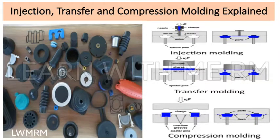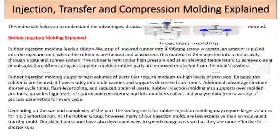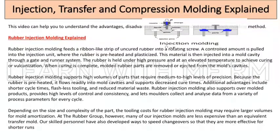This video can help you understand the advantages, disadvantages, and recommended uses for each molding method. Rubber injection molding feeds a ribbon-like strip of uncured rubber into a rotating screw. A controlled amount is pulled into the injection unit where the rubber is preheated and plasticized, then injected into a mold cavity.